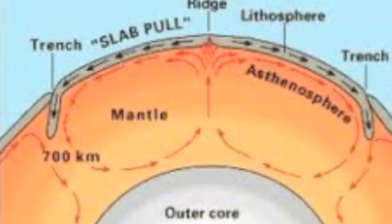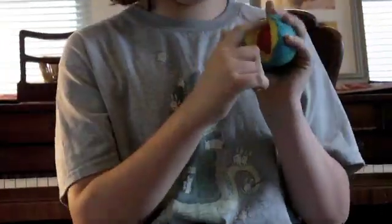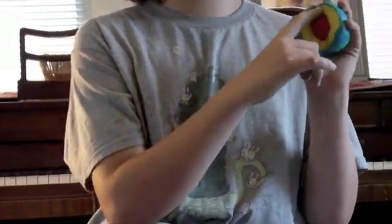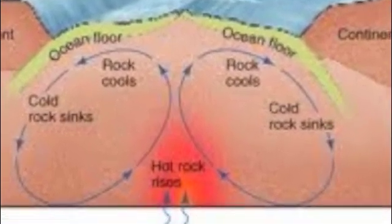The process that causes the plates to move is a cycle called convection. How convection works is heat and hot lava rise from the Earth's core to the lithosphere, where they cool down and become more dense. Then the pull of gravity proceeds to carry these materials back to the core, where they will be heated once more.